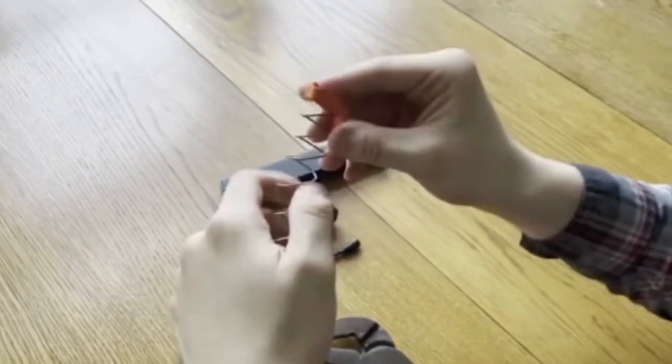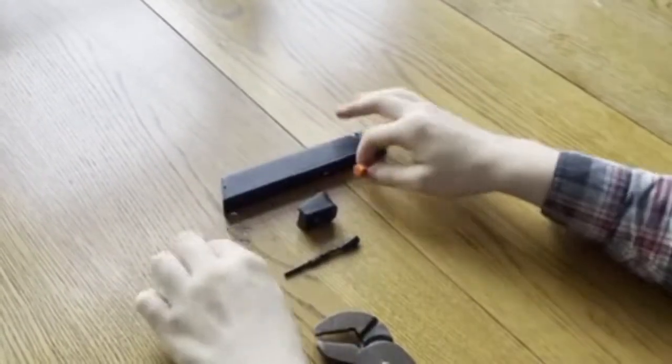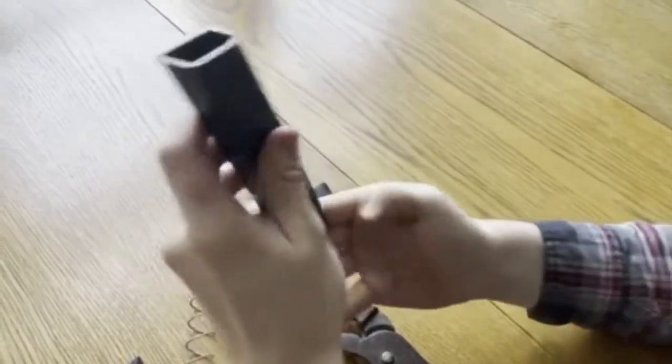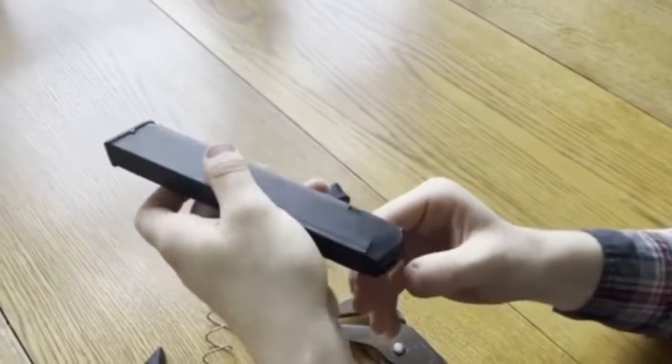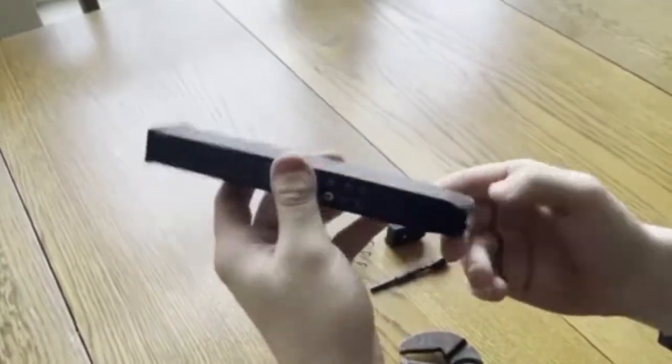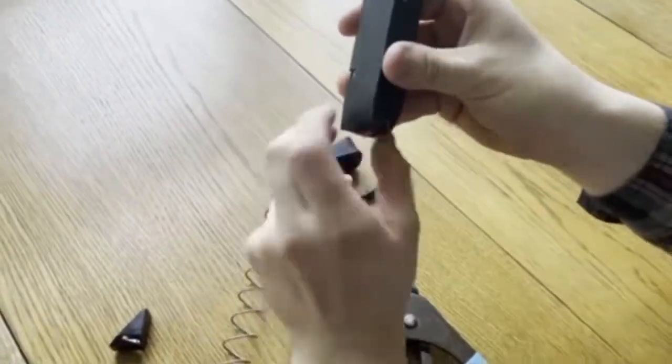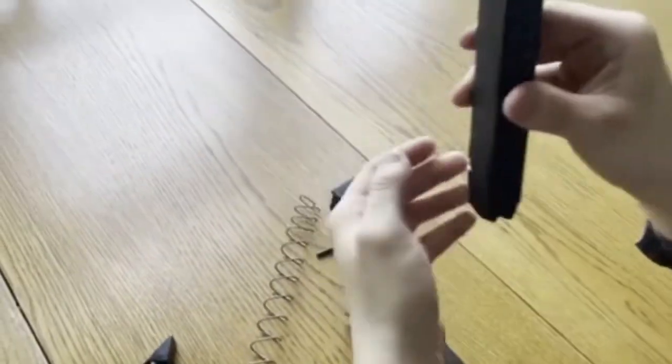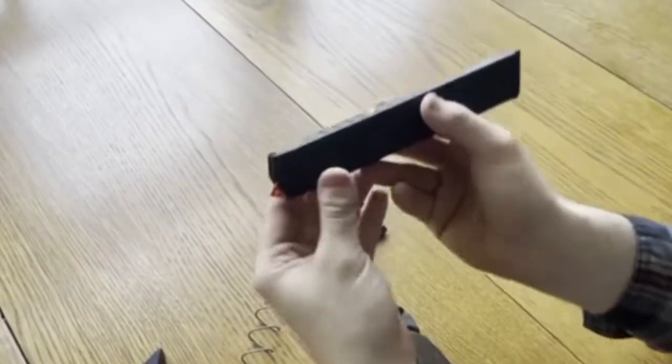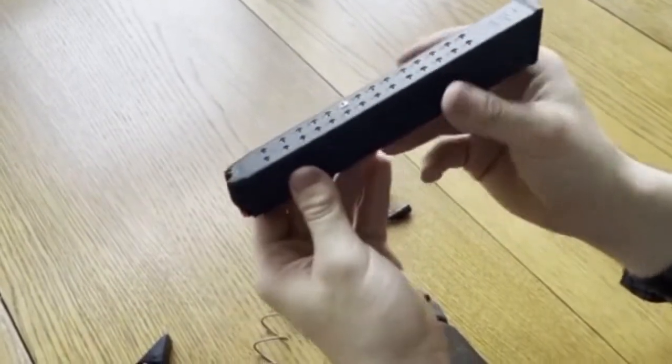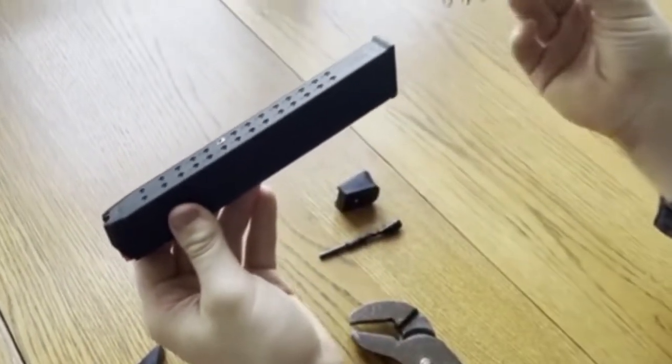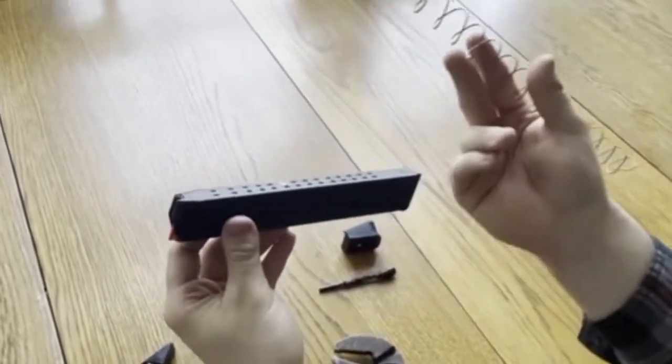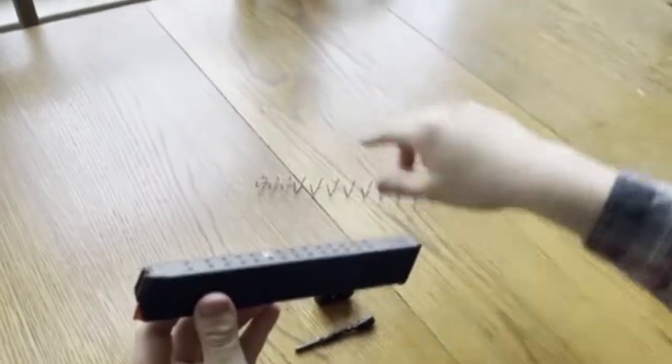And on riveted magazines, first drop the follower into the magazine and orient it correctly. There you go. Okay. So once it's in place, insert your magazine spring with this part going towards this side, so this goes upwards like this.